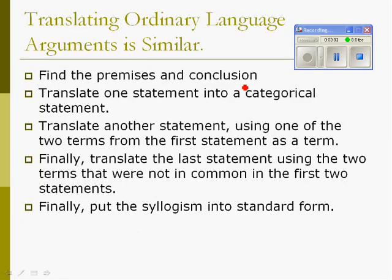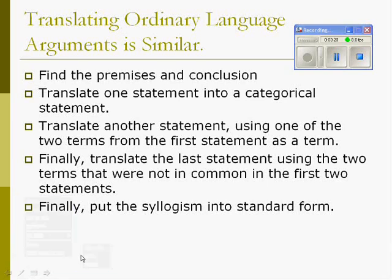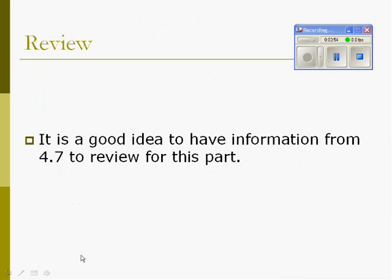When we translate ordinary language arguments, it's fairly similar to what we've been doing in the past. We're going to first find the premises and the conclusion. Then we're going to start by translating one statement into a categorical statement, then translate another statement using one of the two terms from the first statement, and finally translate the last statement using the two terms not in common. Then we put the syllogism into standard form. It's a good idea to review section 4.7, which covered turning ordinary language statements into categorical statements.